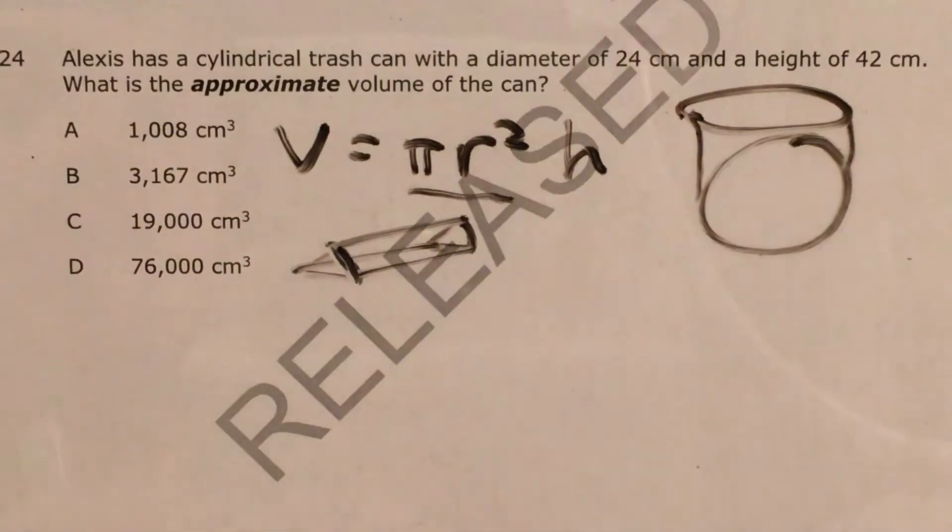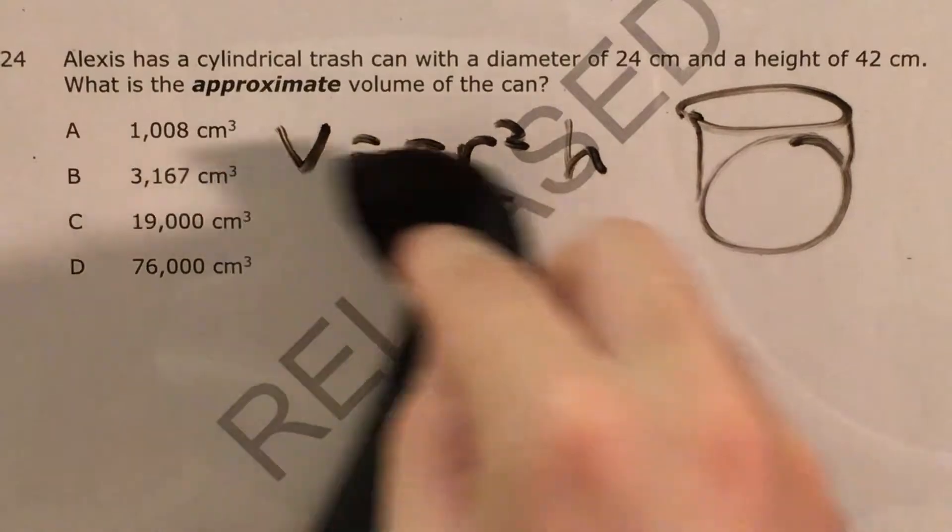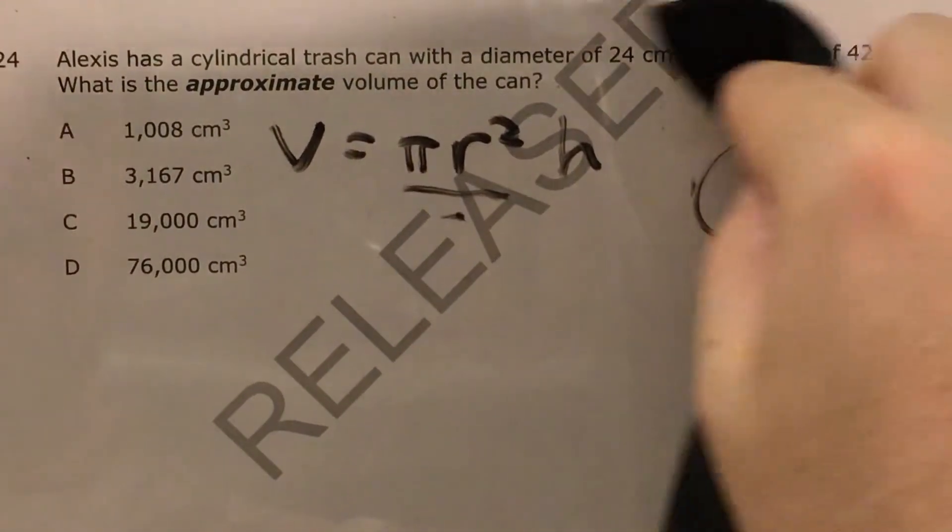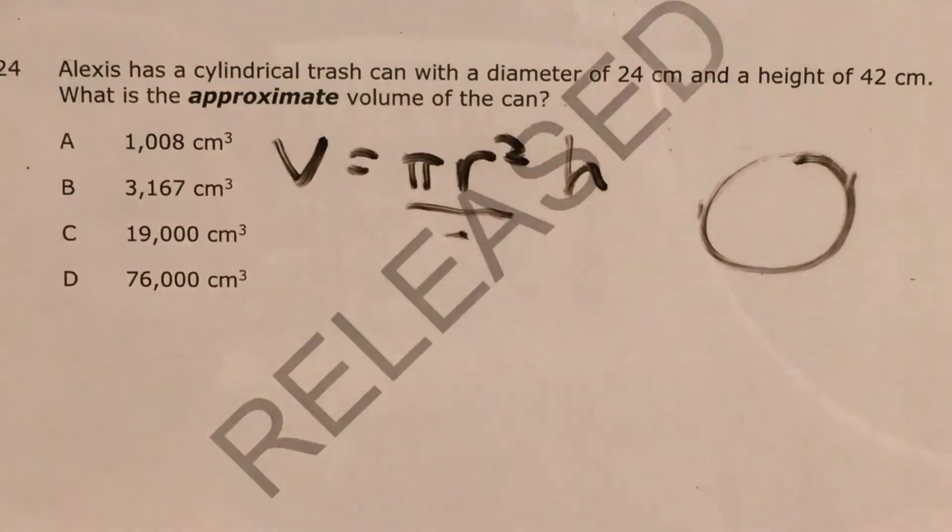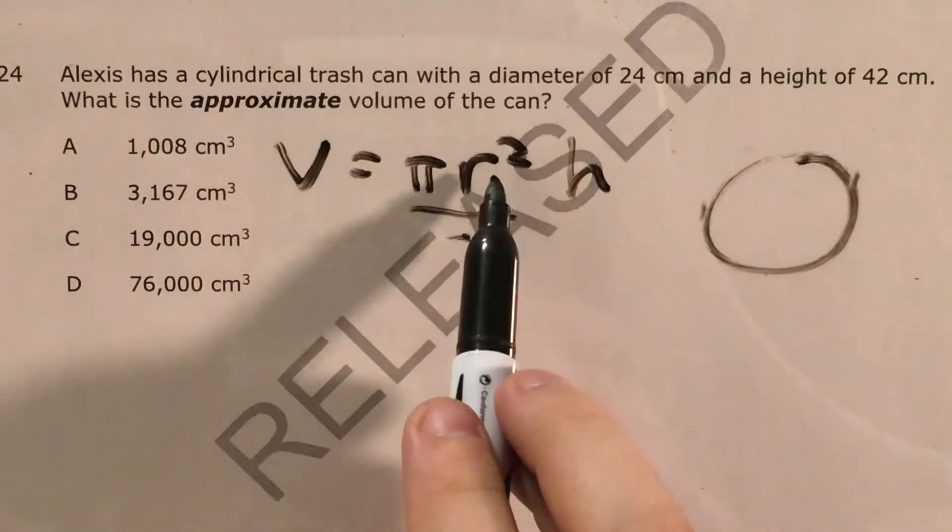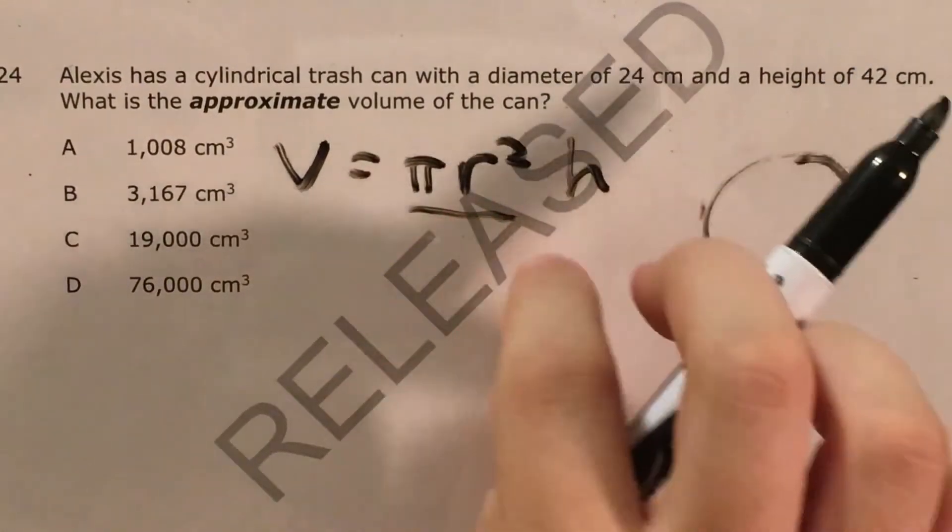Now let's go ahead and talk about what actual dimensions and numbers we're going to use. Because the problem does try to trick us here by telling us that the diameter of this cylindrical trash can is 24 centimeters. Now r, what we need for the formula, is actually the radius.